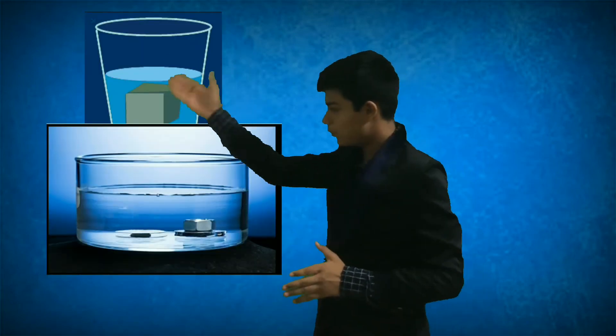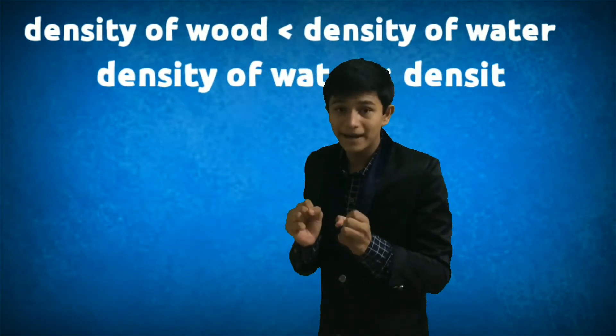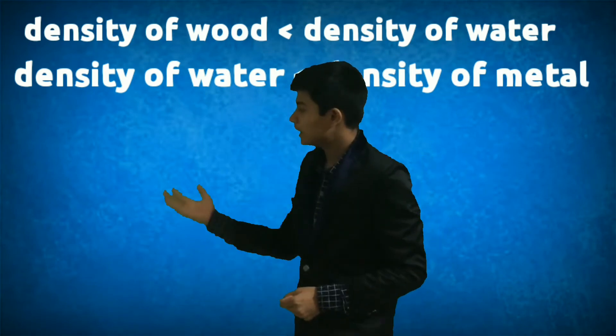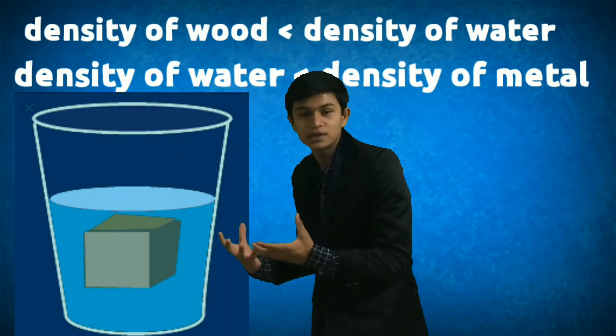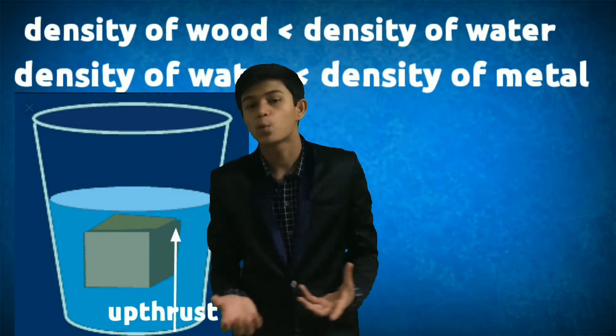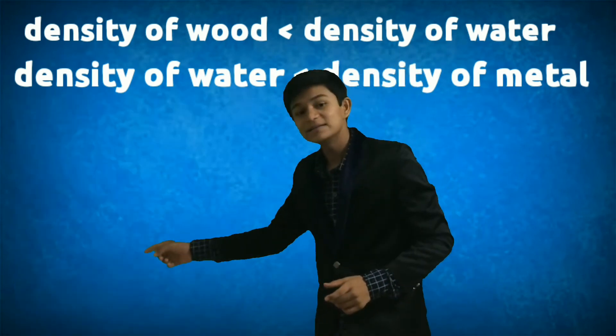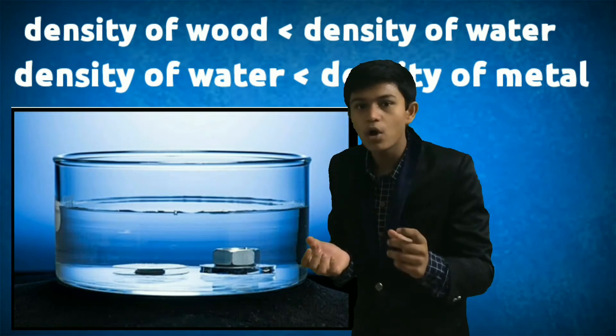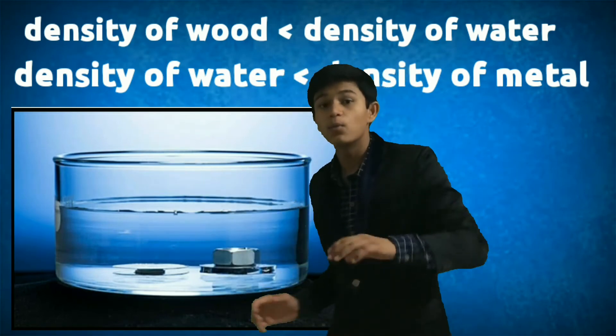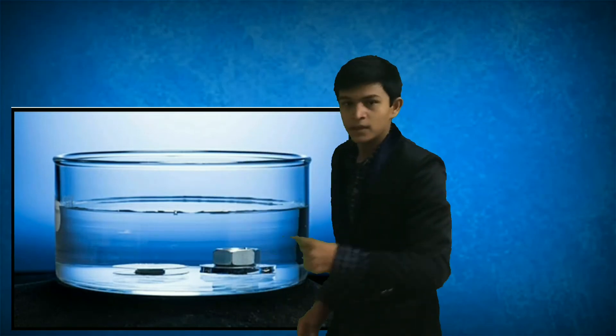Now let's understand how the wood floats and the metal sinks. The wood has less density than water — it has less compact mass than water — so it floated. The upthrust, which is the force coming from the water, was more than the weight due to the low density of the wood, so it floats. The metal had more density and was small in size. Even though it is of the same mass, it has more density than water, so it sank. This is the difference between density and mass — it is about how compact the mass is.